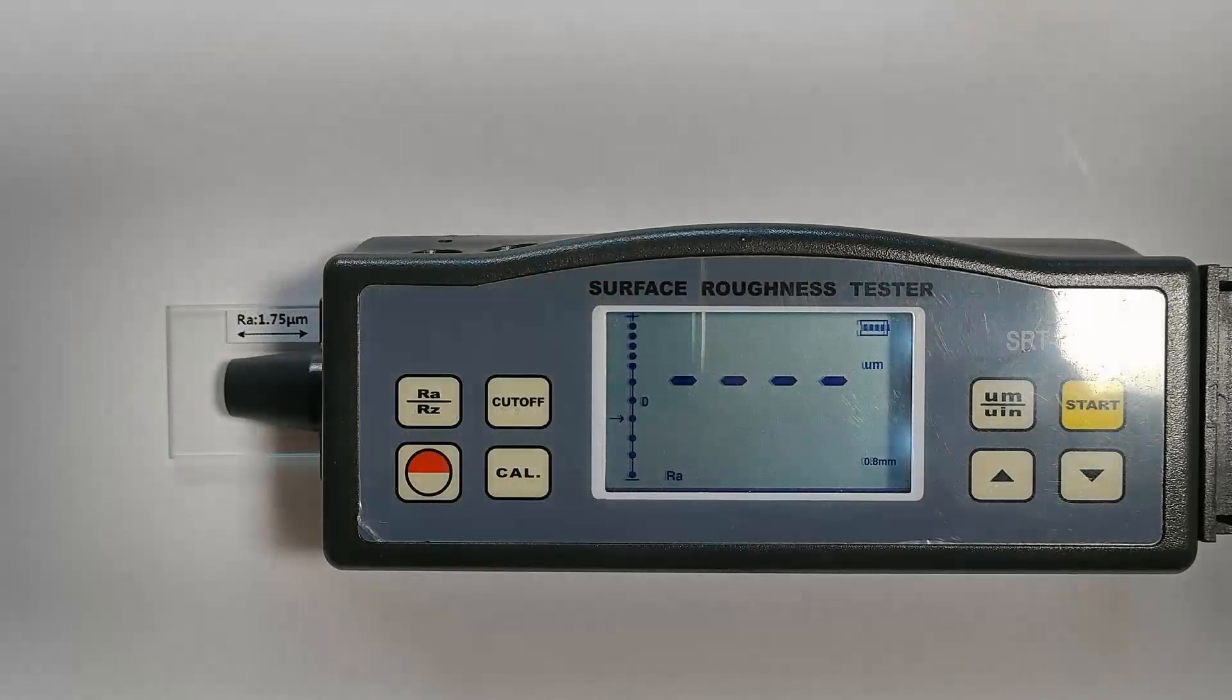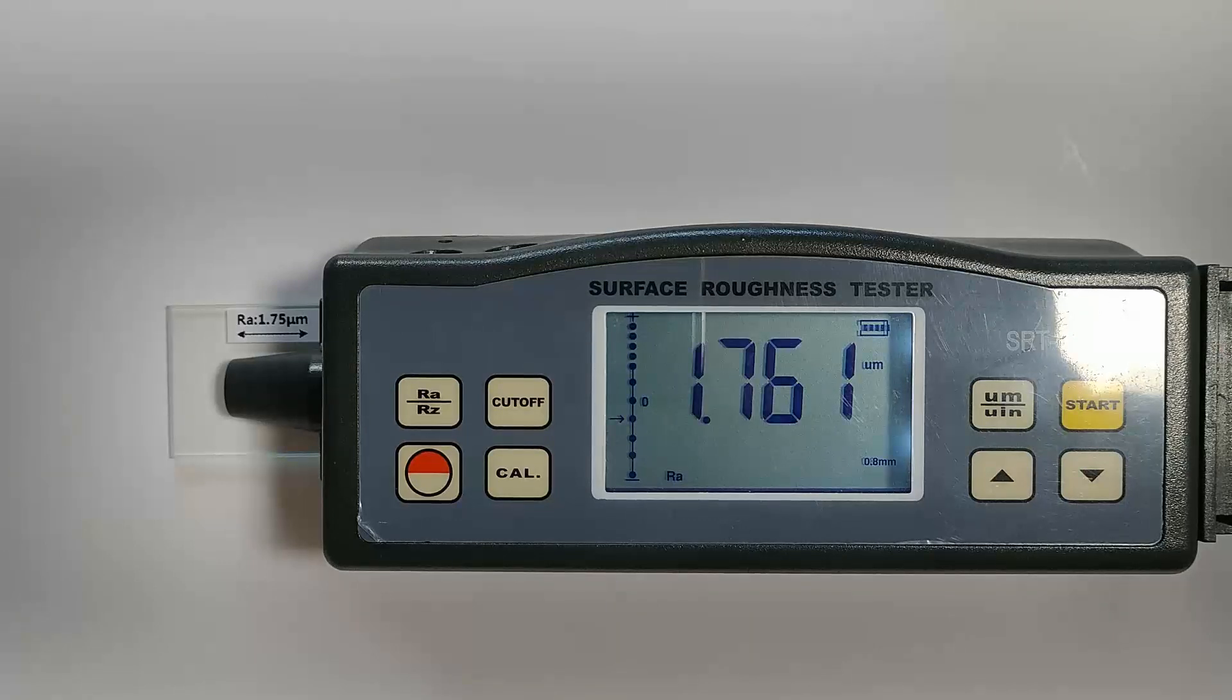After I've done my surface finish measurements, I'm going to recalibrate the profilometer just to verify that it is still reading correctly after I've taken the various measurements to ensure that I don't have an error in my readings. So the standard is 1.75 micron. I'm reading 1.76 within the variation of normal measurements. That is really close.